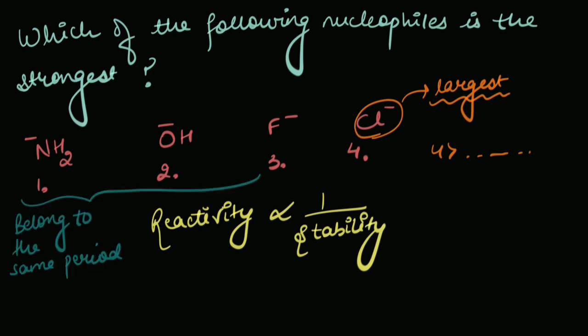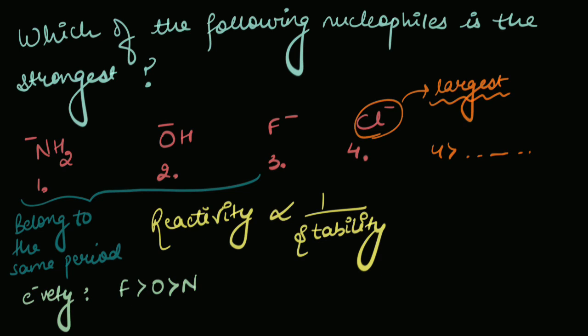Well, all three belong to the same period. So there's not much difference in their size. But we can think of electronegativity. Fluorine is more electronegative than oxygen and oxygen is more electronegative than nitrogen.